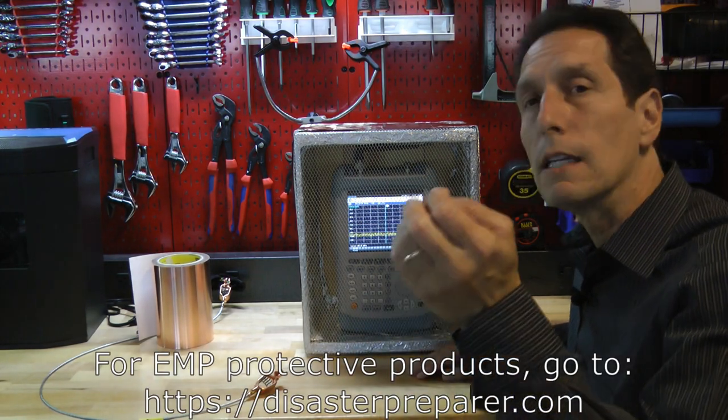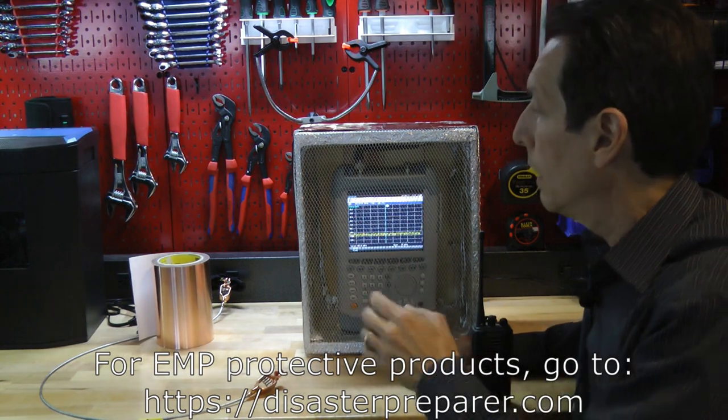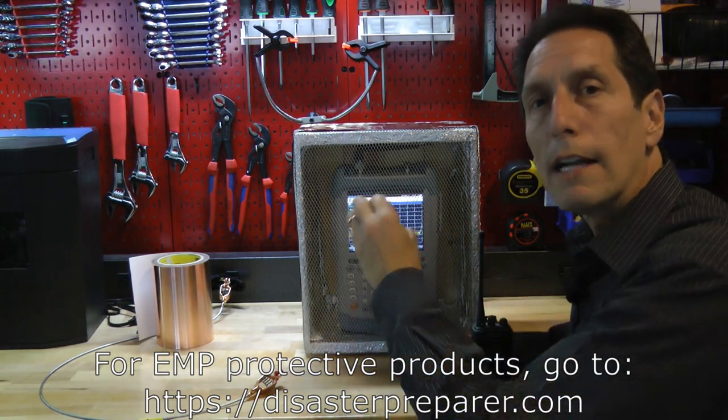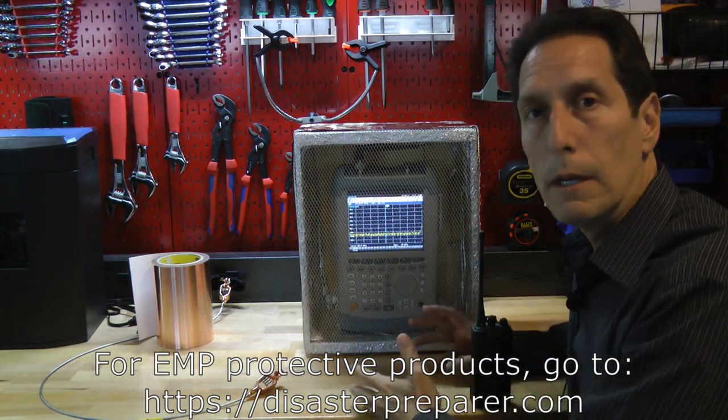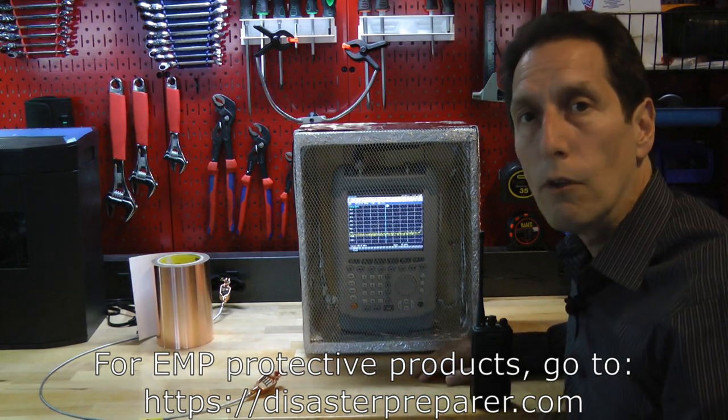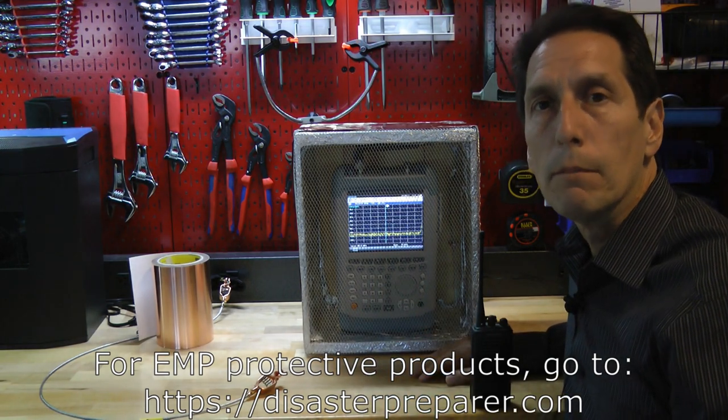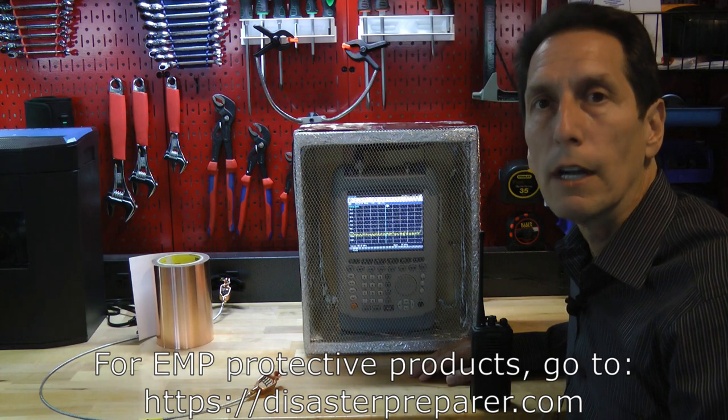In the case of an EMP, we're trying to protect against a radiated pulse that comes in and the conductive material will act to reflect it as well as absorb it regardless of whether or not it is grounded. I hope that answers the question. Feel free to go ahead and post questions and comments and I'll do my best to try and answer them.